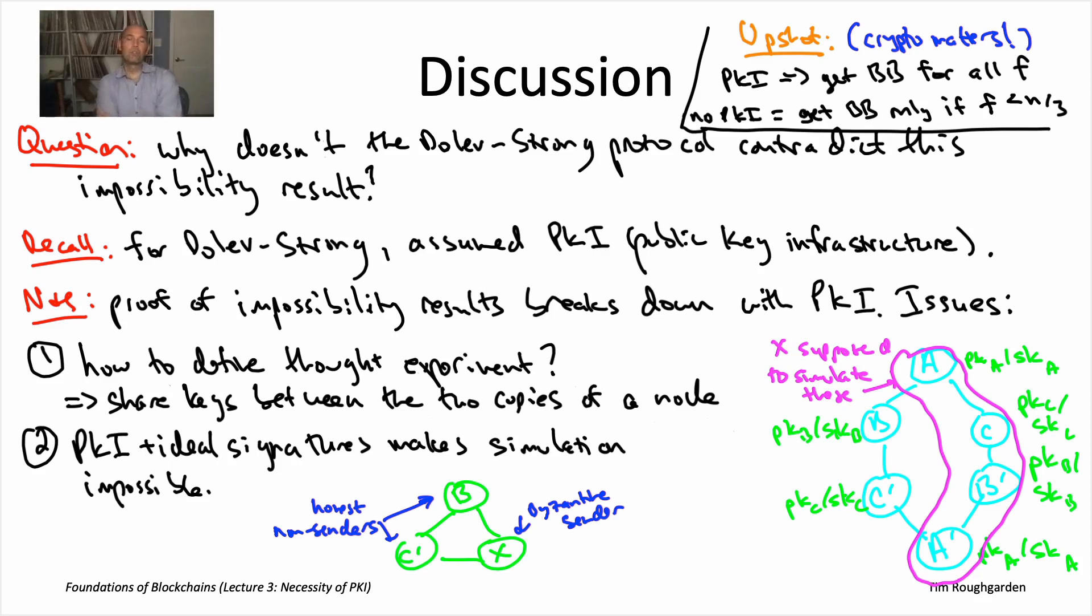So coming up next, what we'll start doing in the next lecture, lecture four, is we'll start trying to relax this very strong assumption we've made about network reliability. We want to relax the assumption that we're in the synchronous model. And here again, impossibility results are going to play a crucial role in understanding what we might be able to hope for, and what kind of compromises are required. So we'll start that study next lecture. I'll see you there.